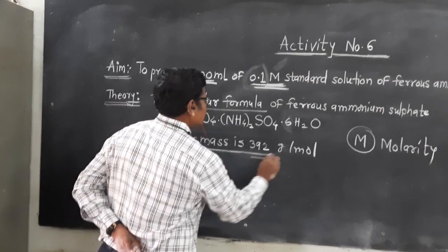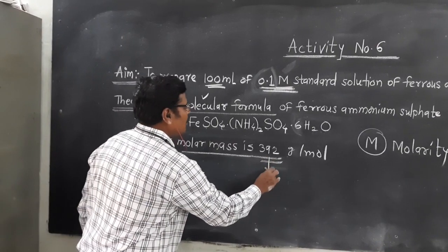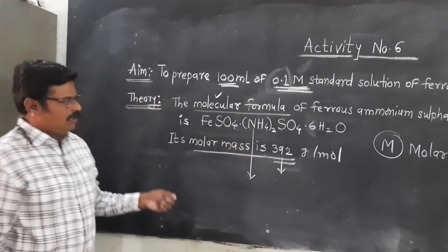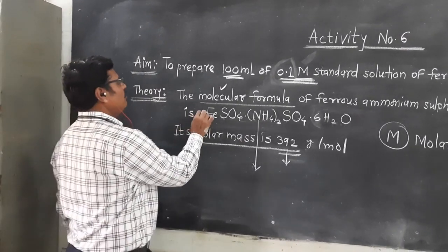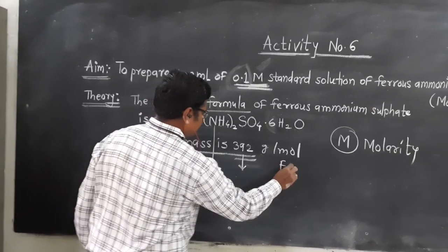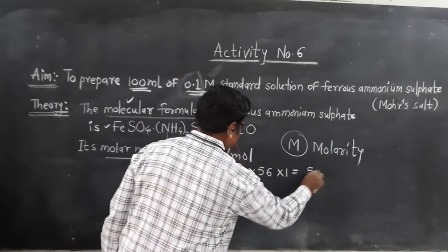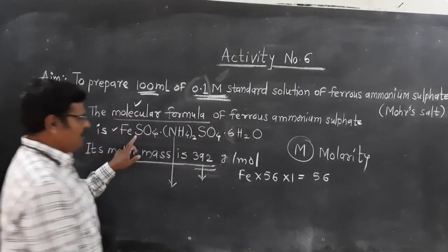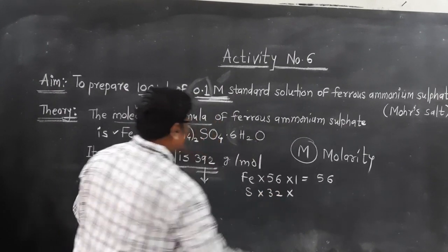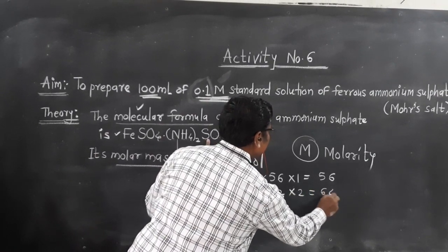The molecular mass of ferrous ammonium sulfate is 392. Let us calculate the molecular mass using its molecular formula. For Fe, atomic weight is 56 and number of atoms is 1, giving 56. For Sulphur, atomic weight is 32 and number of atoms is 2, giving 64.